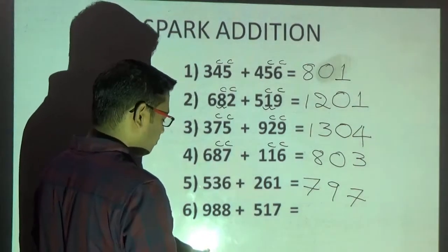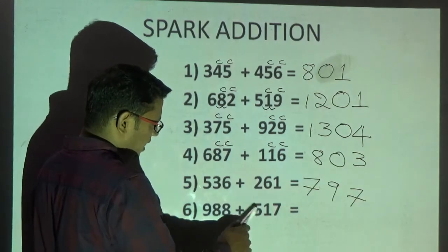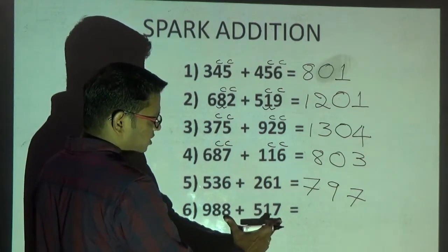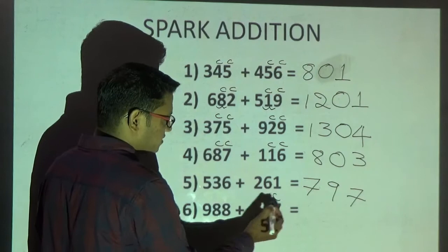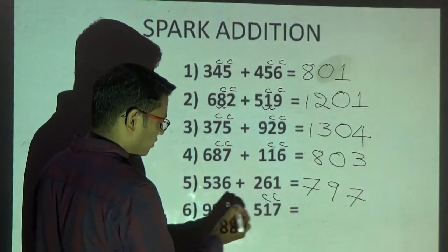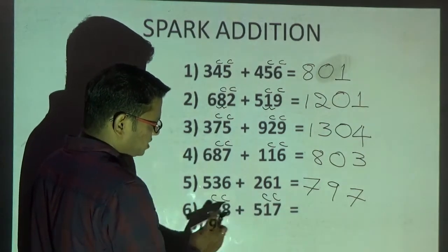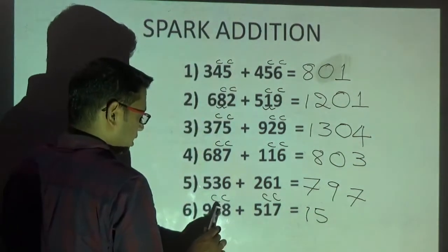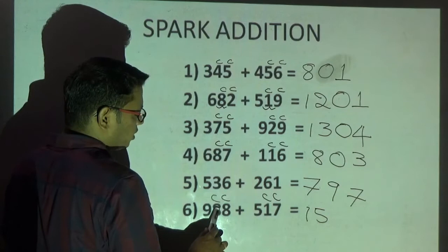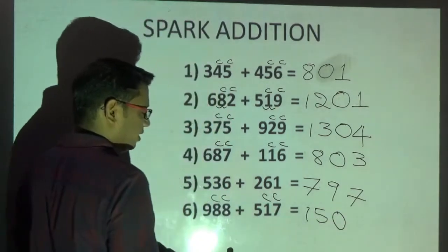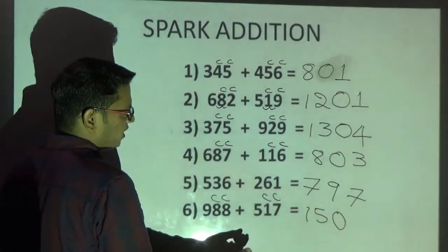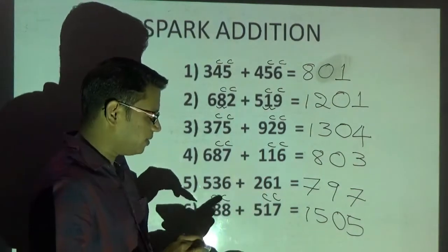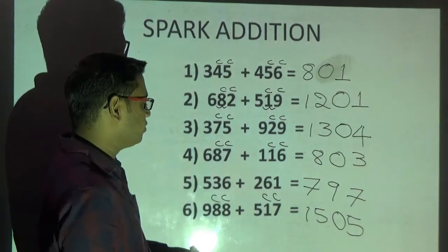Next problem: 9 plus 5 is 14 — observe next two digits, it is 9. Whenever you get 9, be very careful and observe the next two digits. 7 plus 8 is going to generate carry. If 7 and 8 generate carry, that carry goes forward and this will also generate carry. 9 plus 5 is 14 — next is generating carry so write 15. Then 8 plus 1 is 9 — next is going to generate carry so 9 becomes 10, write end digit only. Then 7 plus 8 is 15, write end digit only. Answer is 1505. That completes Part 2 of our Spark addition.